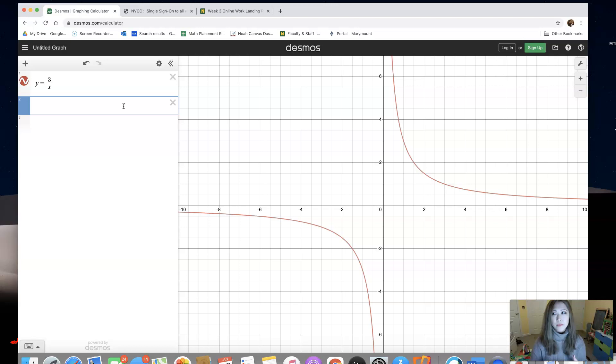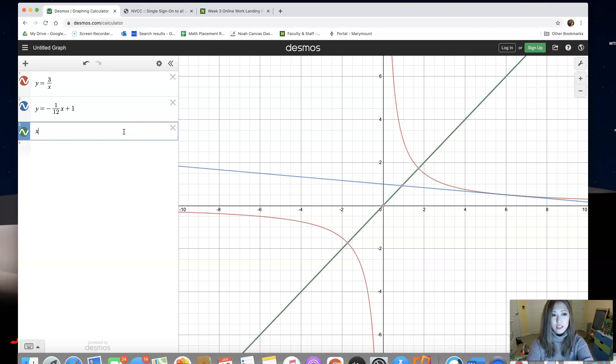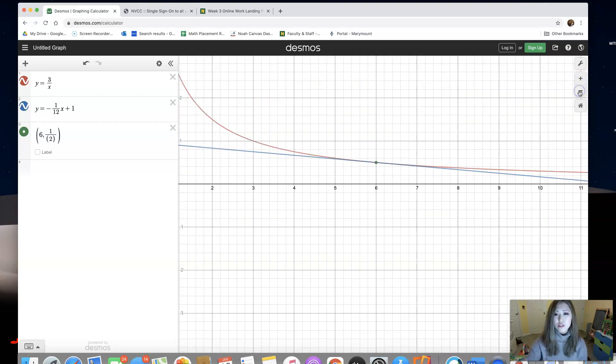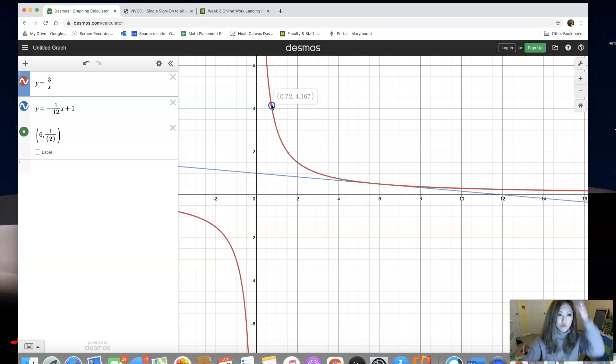Y equals 3 over X. That was the original function. Now the equation of the tangent line that we just got was negative 1 over 12X, and then the Y intercept was 1. Now what I'm going to do is I'm going to plot the point, X value was 6 and Y value was 1 half. So take a look, I'm going to go to that area, zoom in. Do you see that I zoomed in a little too much? You see the beautiful, this rational function, red graph, and the blue line, that's the tangent line.